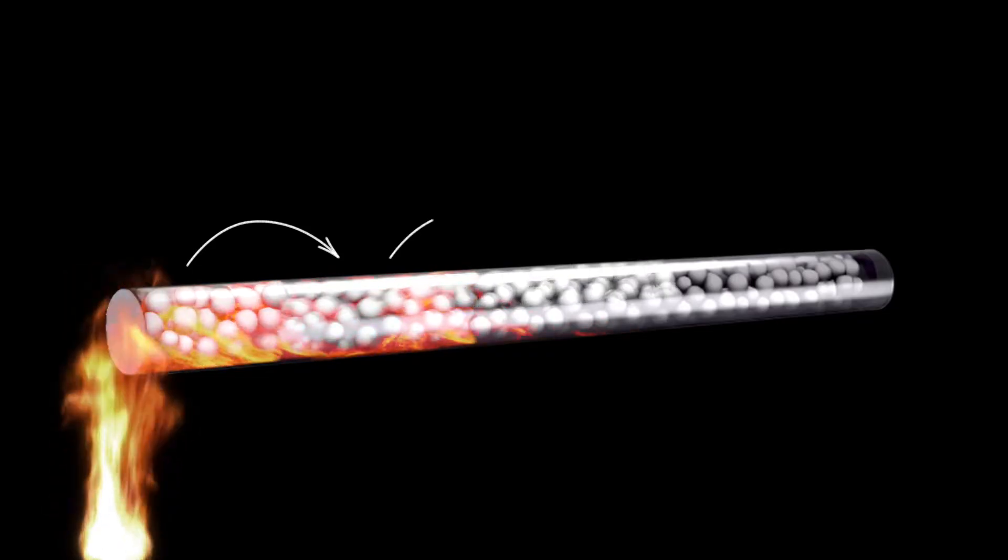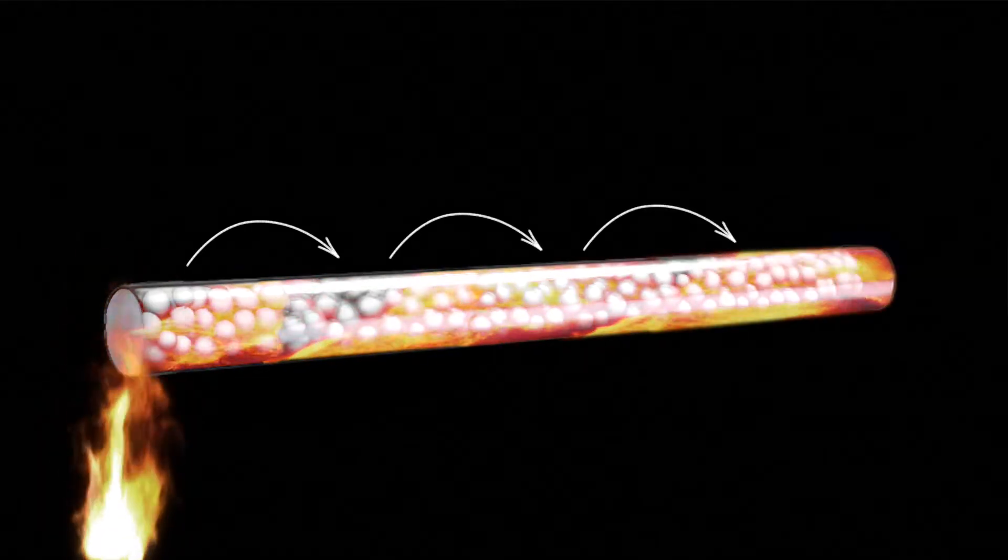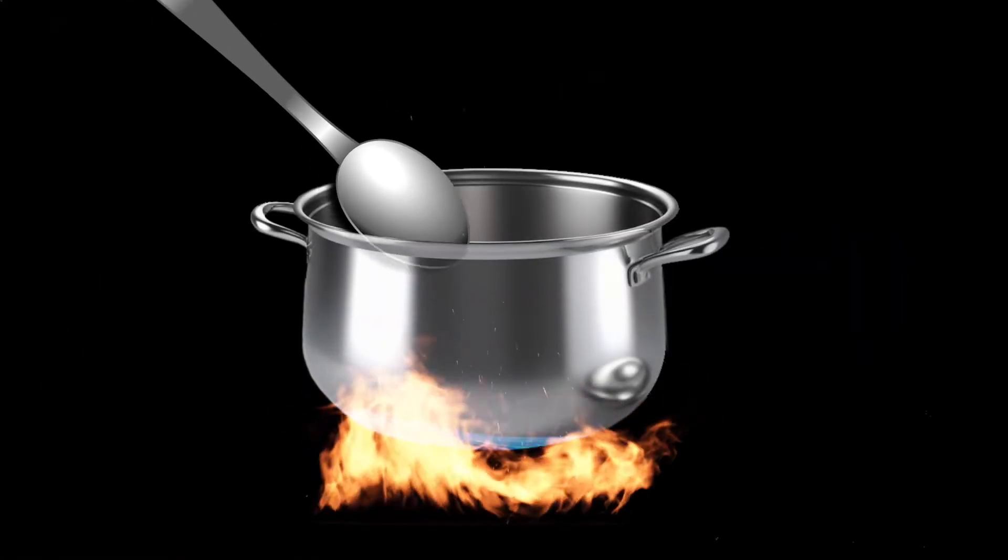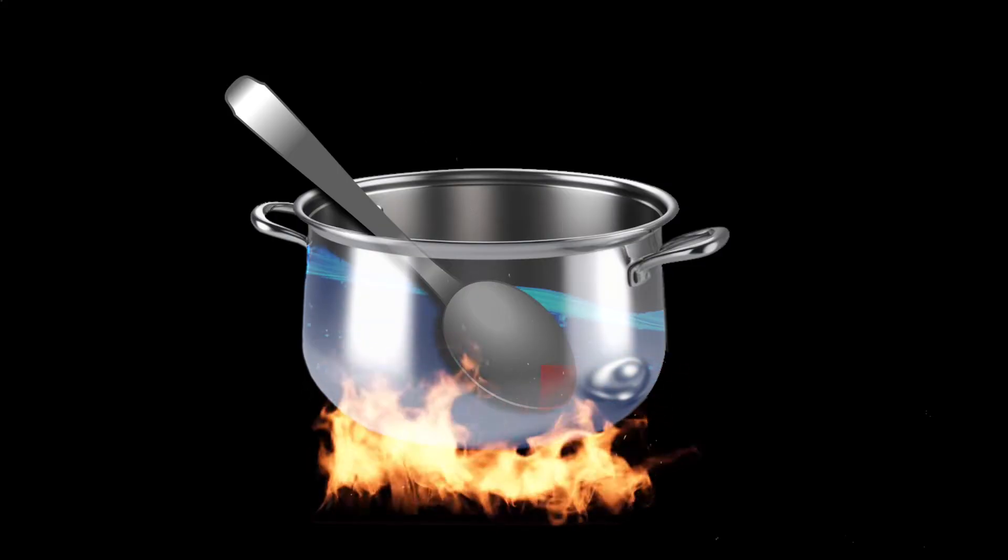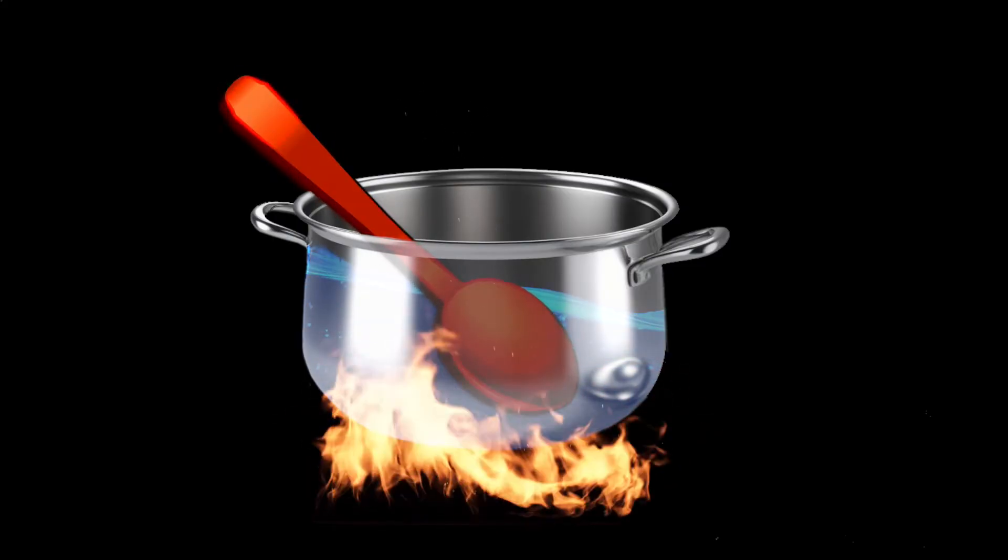Like a chain reaction, the heat spreads through the solid, similar to how falling dominoes knock down the next one. This is why a metal spoon left in a pot of boiling water becomes hot. The heat travels through the spoon from the water to your hand.